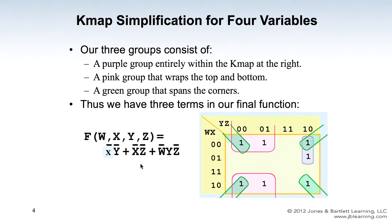The boolean function that began with seven terms is now reduced to three much simpler terms: X-not Y-not, OR X-not Z-not, OR W-not Y Z-not. This simplified boolean function is much simpler for circuit implementation compared with the original seven-term function.